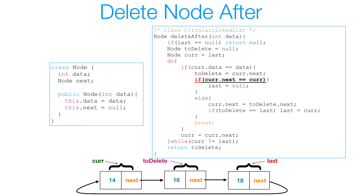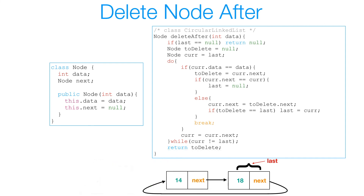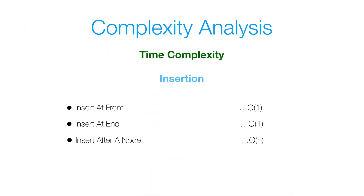I check if cur is not equal to last — it's not, so I re-enter the loop and find that cur's data matches 14. I set to-delete to cur.next. Then I check if cur.next equals cur — that's the single-node case, where I'd set last to null. Otherwise, I set cur.next to to-delete.next. I also check if to-delete is the last node, because then I'd need to update last to the previous node. Since it's not, I break out of the loop and return to-delete.